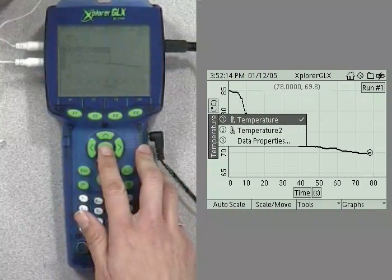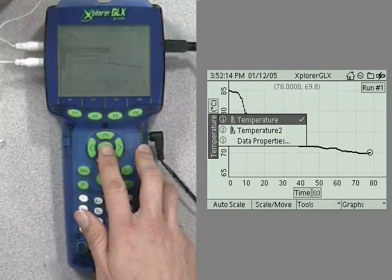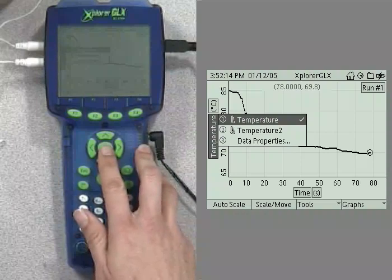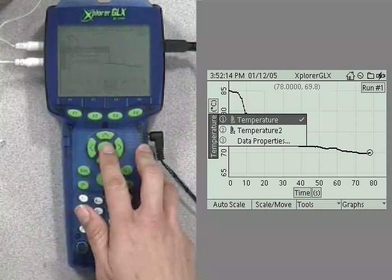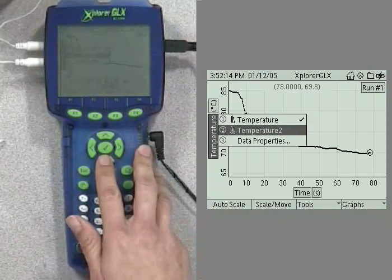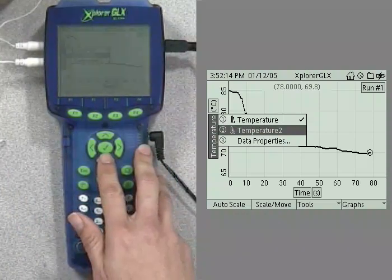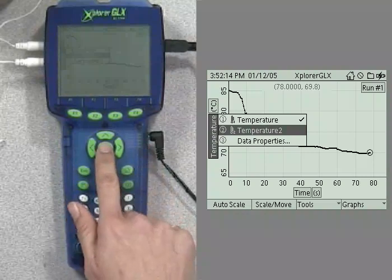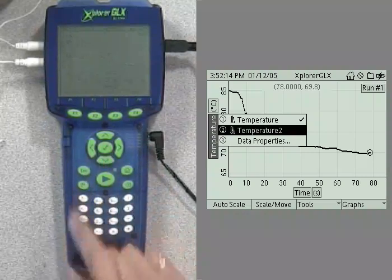Now, I've got a menu of items to select from. Currently, the selection is temperature 1, which is the temperature display from temp port number 1. We want to see the temperature from the port number 2, so we use the arrow key to move down to that and push the check mark again to select it.